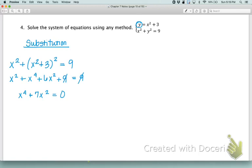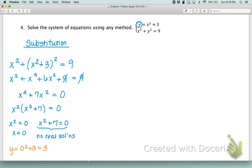We can solve this using factoring because these have a GCF of x squared in common. That gives us x squared times (x squared plus 7) equals 0. Either x squared equals 0 or x squared plus 7 equals 0. For the first equation, x equals 0. But the second, we get x squared equals negative 7, which means imaginary solutions. This one has no real solutions. So x equals 0 is the only one we have to worry about. If x equals 0, that means y equals 0 squared plus 3. So y equals 3. So (0, 3) appears to be the only solution.